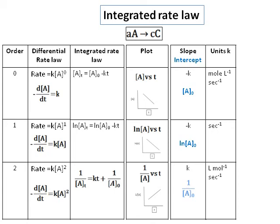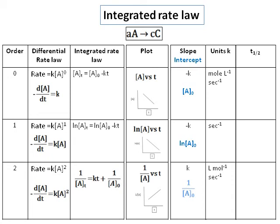Apart from the order of the reaction, we have something called T-half. T-half is the time required for half of the reaction to complete. Because sometimes a reaction will take such a long time, we need to know what happens in the middle. T-half is the time when half of the reaction has proceeded. The T-half for a zero order reaction becomes concentration of A at time zero divided by 2K. The T-half for a first order reaction becomes 0.693 divided by K. And for a second order reaction, it is 1 over K times concentration of A at time zero.